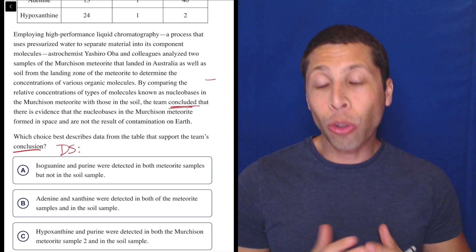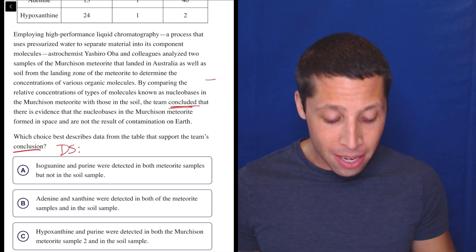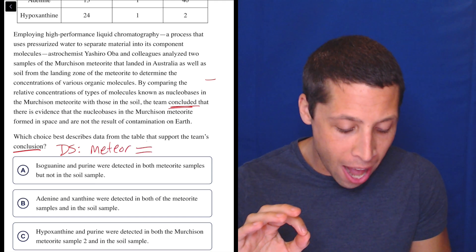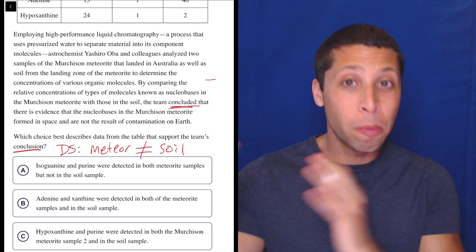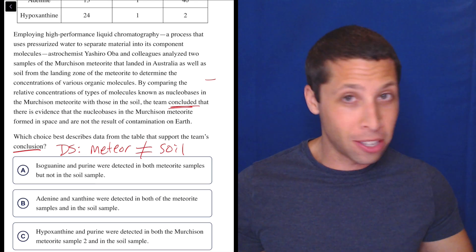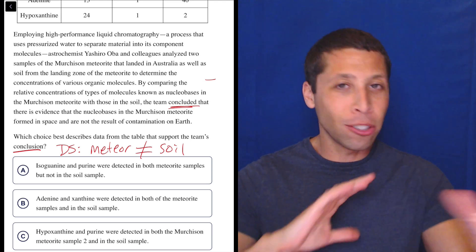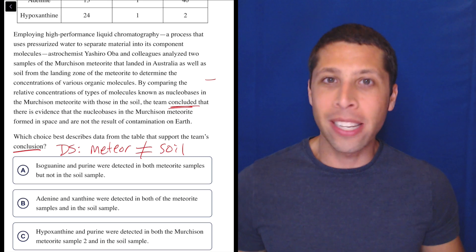Try to turn a lot of these questions into mathematical kind of equations. To me, this is basically the same as saying meteor not equal to soil. They're saying the meteor is from space. The soil is just the soil, the Earth's soil. So that is different stuff. And somewhere in this chart, I'm going to have some sort of thing that shows me a difference between them. So let's keep that in mind as we now go through the choices.